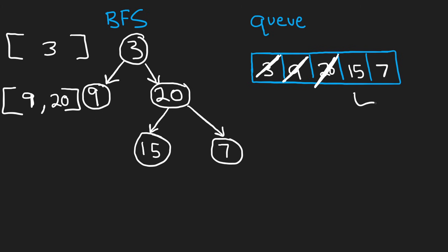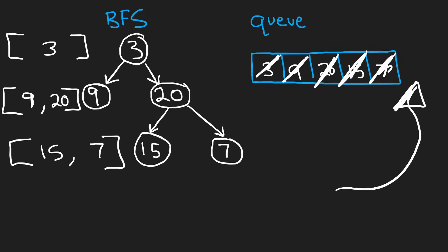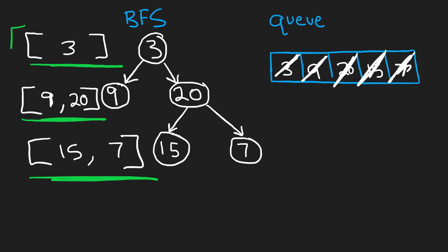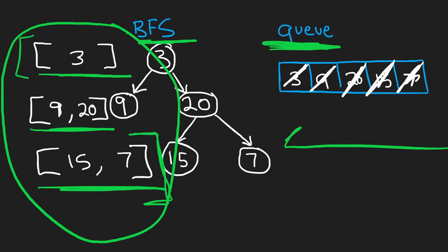Now time to go to the third level. We see there are two values in our queue, so we're going to pop both. First we pop 15 and add it to the sub-list for the third level. Then we pop 7 and add it to the sub-list for the third level. Neither of these nodes had any children, so now we're done — we know we're done because our queue is now empty. We created a sub-list for every single level, and as the question wanted, we package all three sub-lists into one list and return that as our result. So we're really just doing a breadth-first search algorithm with a queue on this binary tree.